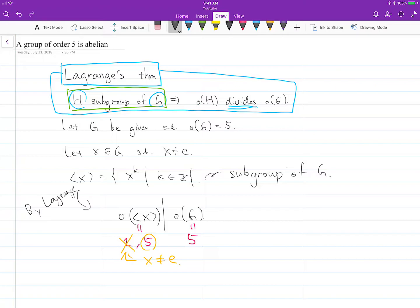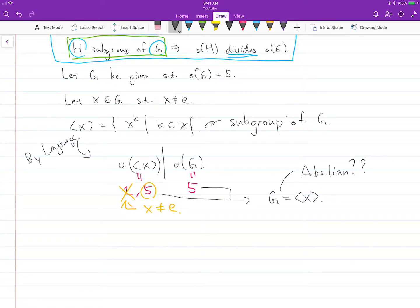So now we have 5 here, which means G and this cyclic group are the same thing. Now it's going to be relatively simple to show that G is abelian. That's our goal.